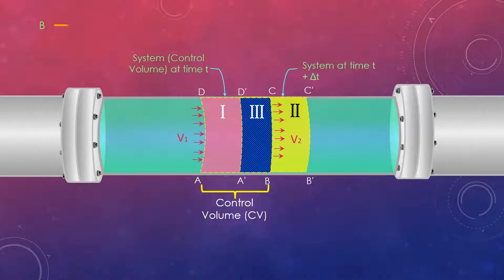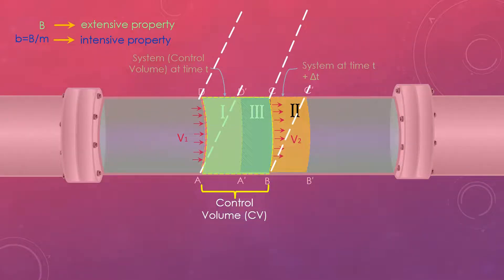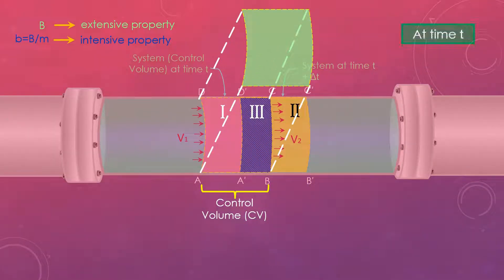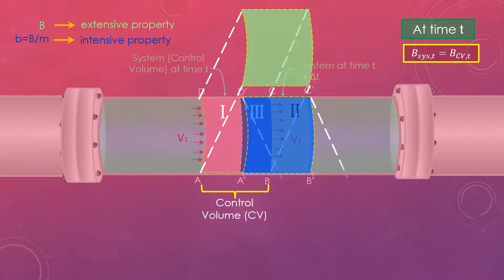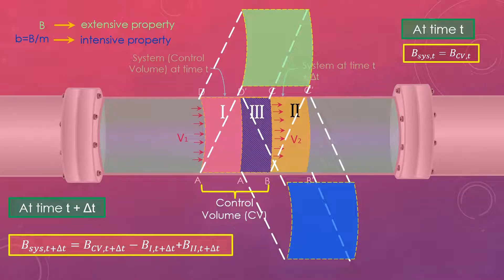Let B represent any extensive property such as mass, momentum, energy and b as B/m which represents the corresponding intensive property. Noting that extensive properties are additive, the extensive property B of the system at time t as B_system is equal to B_control volume. And at t plus delta t as B_system is equal to B_control volume minus B in region 1 plus B at region 2.